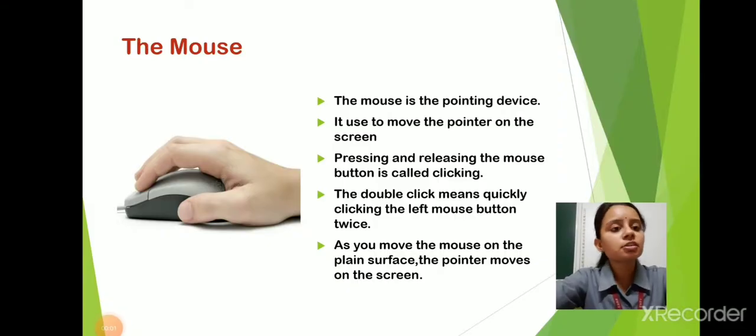Now, the next input device is mouse. Mouse is a pointing device. It has two buttons, right and left, and it also has a wheel called the scroll wheel.